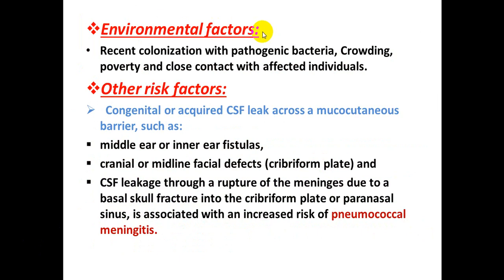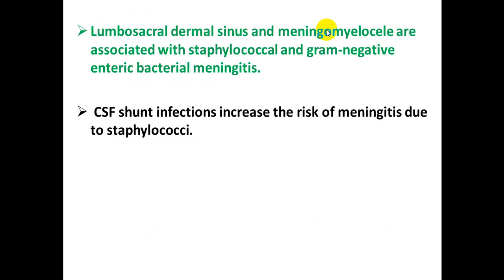Environmental factors include recent colonization with pathogenic bacteria, living in overcrowded areas, poverty, and close contact with affected individuals. Other risk factors include congenital or acquired CSF leak across the mucocutaneous barrier such as middle ear or inner ear fistulae, cranial or midline facial defect, cribriform plate, or CSF leak through rupture of meninges due to basal skull fracture, which is associated with pneumococcal meningitis. Lumbosacral sinus or meningomyelocele is associated with Staphylococcal and gram-negative enteric bacterial meningitis. CSF shunt infections increase risk of Staphylococcal meningitis.